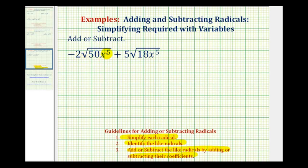For the square root of 50x to the fifth, if we recognize that 25 is a perfect square factor of 50 and 9 is a perfect square factor of 18, this can save us some time. But we can also list the prime factorizations to help determine the perfect square factors, which is what we'll do here.